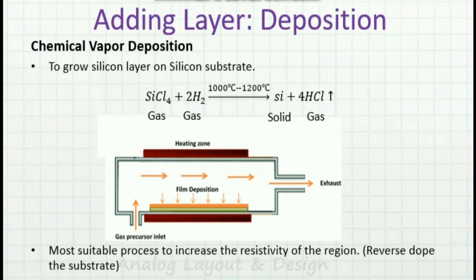Another way of adding a layer is chemical vapor deposition, or CVD, to grow a silicon layer on a silicon substrate. Silicon chloride gas enters the inlet, gets heated, and a thin film gets deposited on the wafer. The gas is then exhausted. This is more suitable for increasing the resistivity of the region or to reverse-dope the substrate. CVD is an important deposition technique that uses very high temperature.